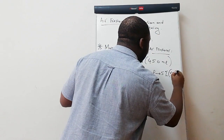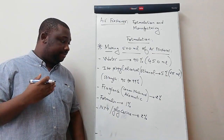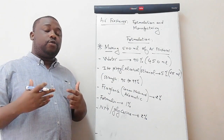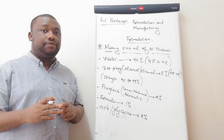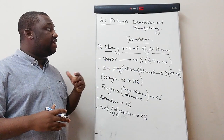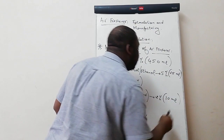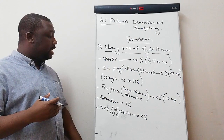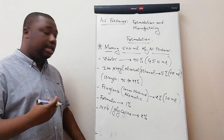The next ingredient is fragrance, which should be two percent of the total volume. In most formulations, fragrance is between one to two percent of the total volume. If you want to produce a quality product that smells good, most of the time they use two percent. How much is two percent of 500 mils? It's 10 mils. As I said, I'm going to use five mils of lemon fresh and five mils of aromatic perfume. Then the next ingredient is formalin — formalin should be one percent of the total volume. One percent of 500 mils is five mils.